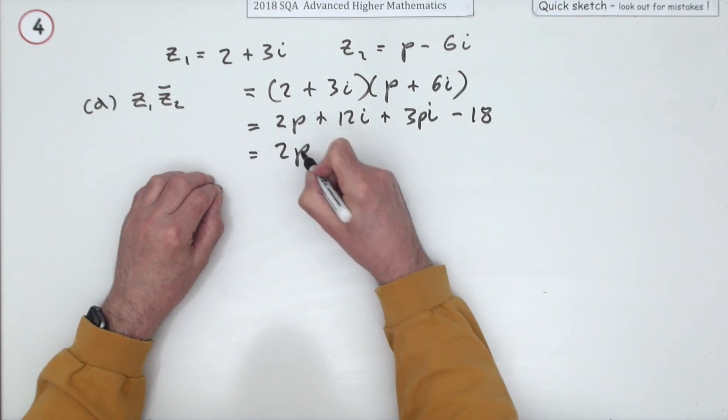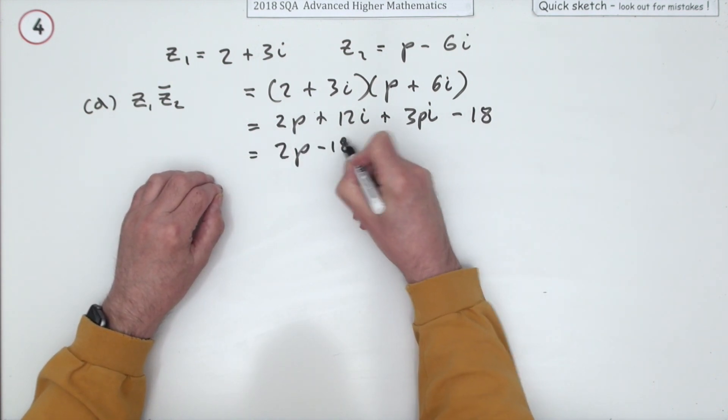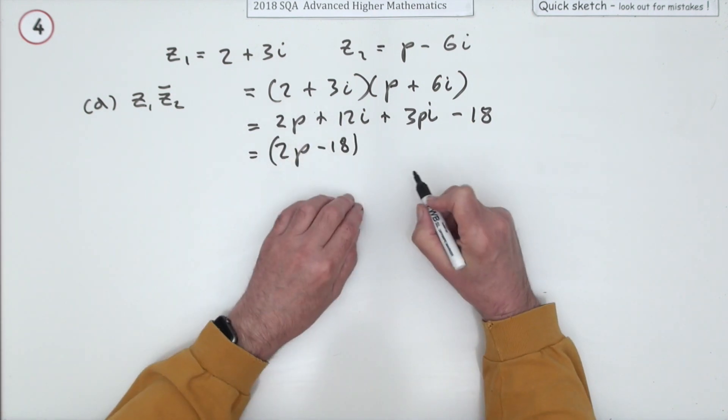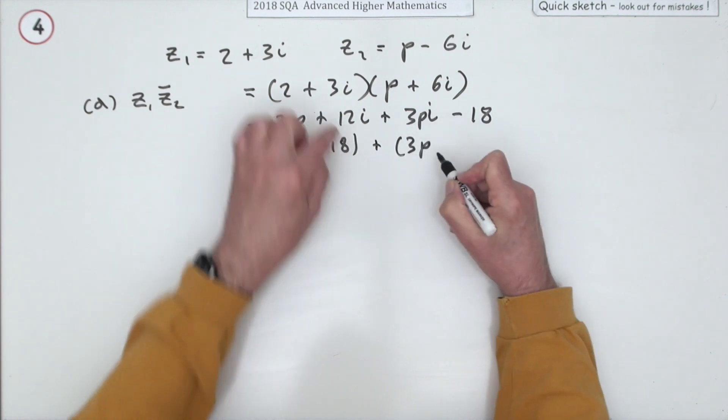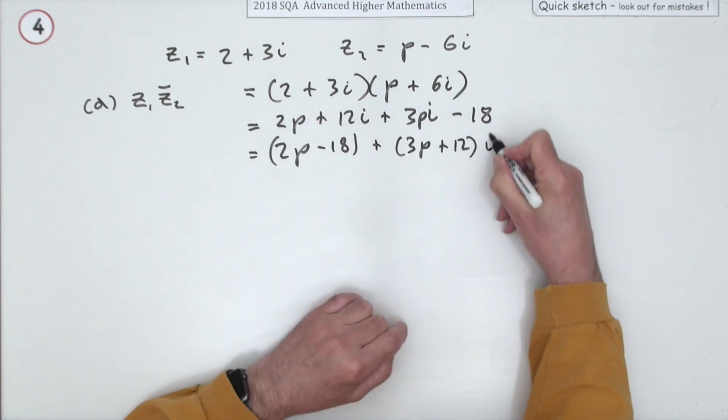So putting that together into the two parts, two P minus 18, and I'll just bracket them off, is the real part, and three P along with the 12 is the imaginary part.